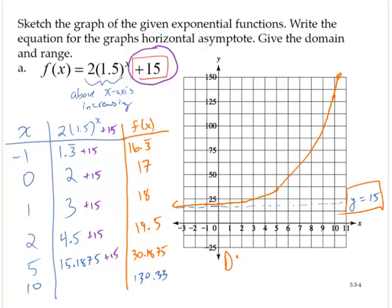The domain appears to be all real numbers or negative infinity to infinity. And the range, the minimum value that we see for the function, it appears to be getting close to 15. And that's where that horizontal asymptote. And it increases from there. It will never actually touch the value 15 though. So the range would be 15 comma infinity. So from 15 to positive infinity.